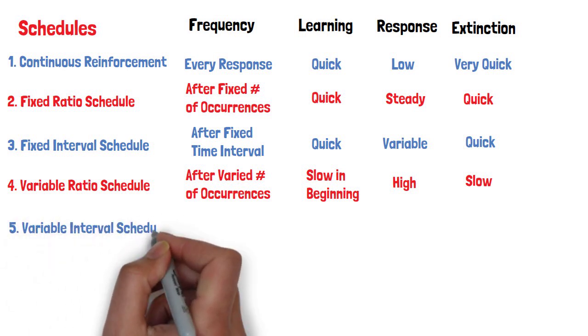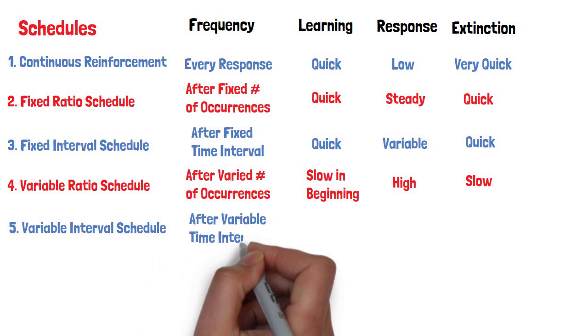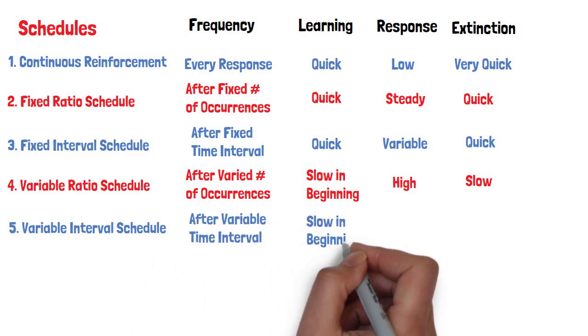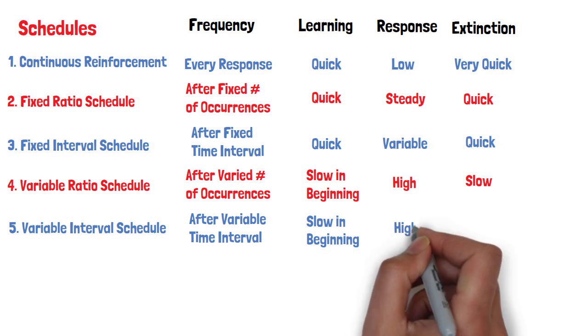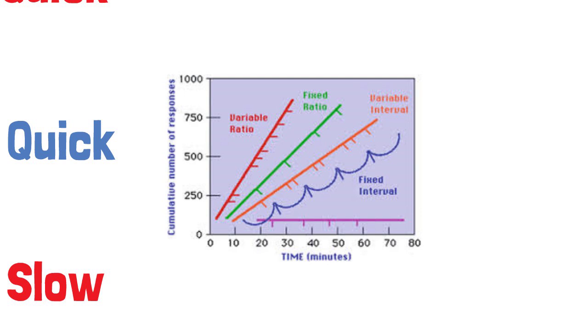Variable interval schedules are the final form of partial reinforcement that Skinner described. This schedule involves delivering reinforcement after a variable amount of time has elapsed. This also tends to lead to a fast response rate, slow extinction rate and steady performance.